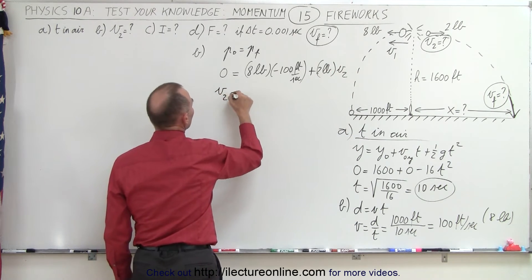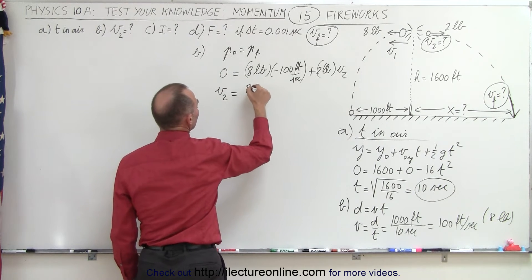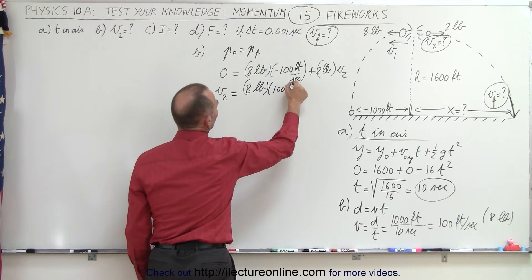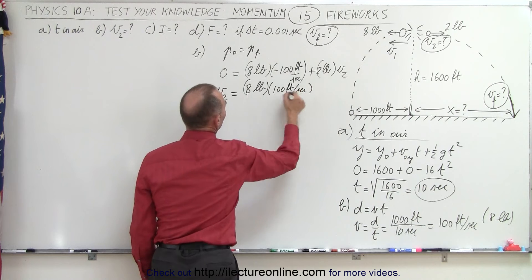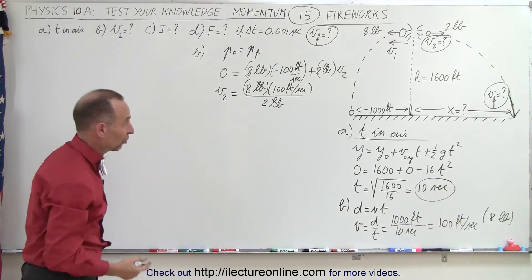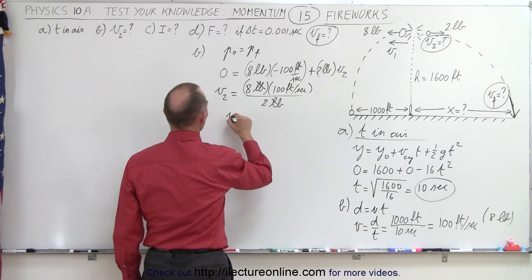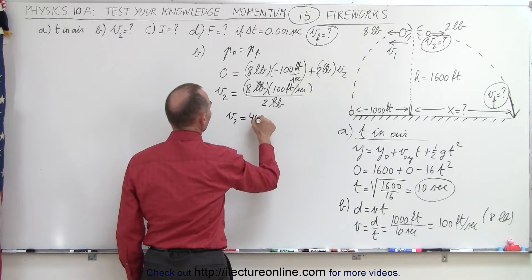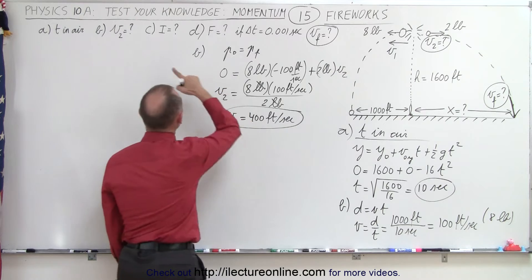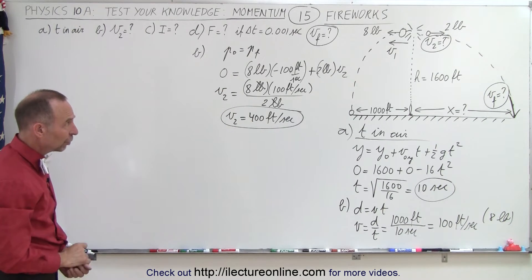We know that v2 equals positive eight pounds times 100 feet per second, divided by two pounds. Notice the pounds cancel out, so it doesn't matter whether we use pounds, slugs, or kilograms. V2 equals 400 feet per second. That is the solution to our second question — the velocity of the two-pound piece.